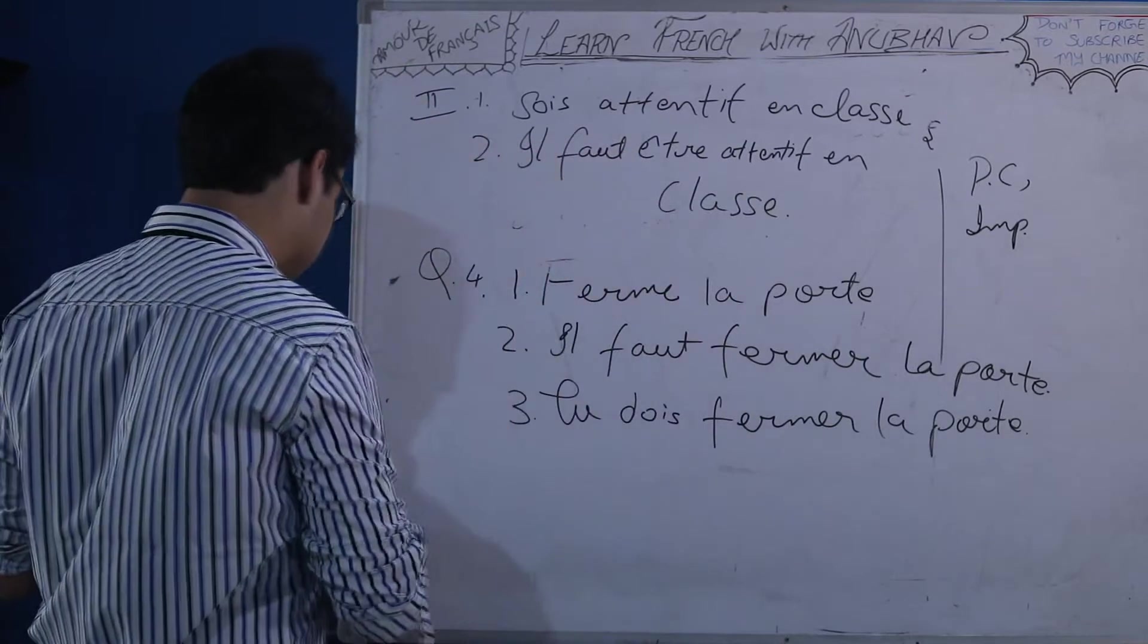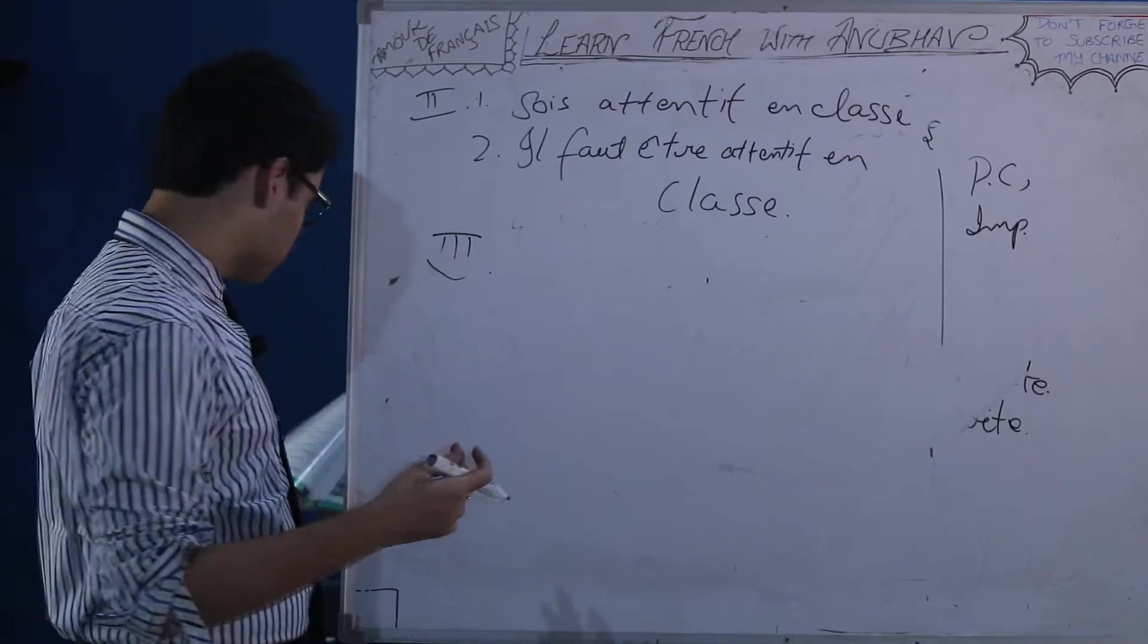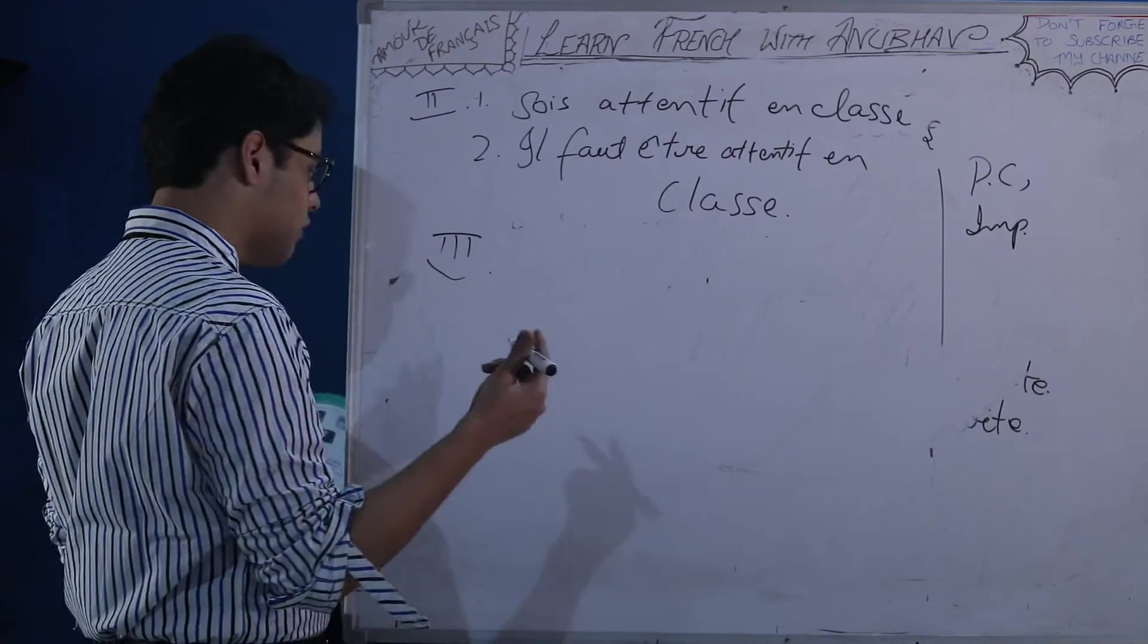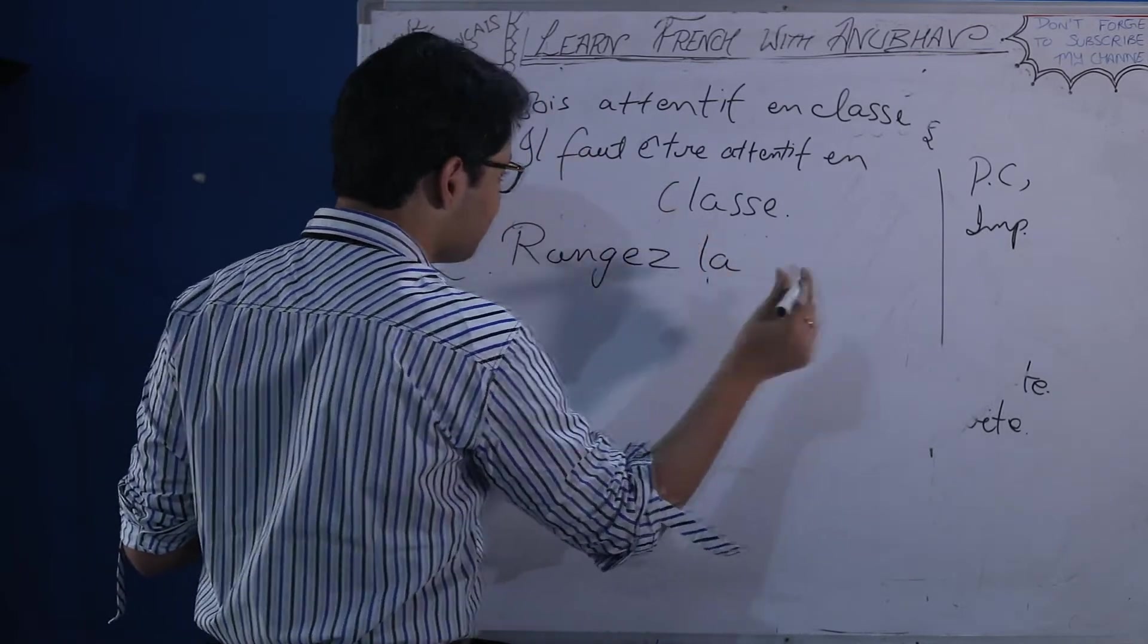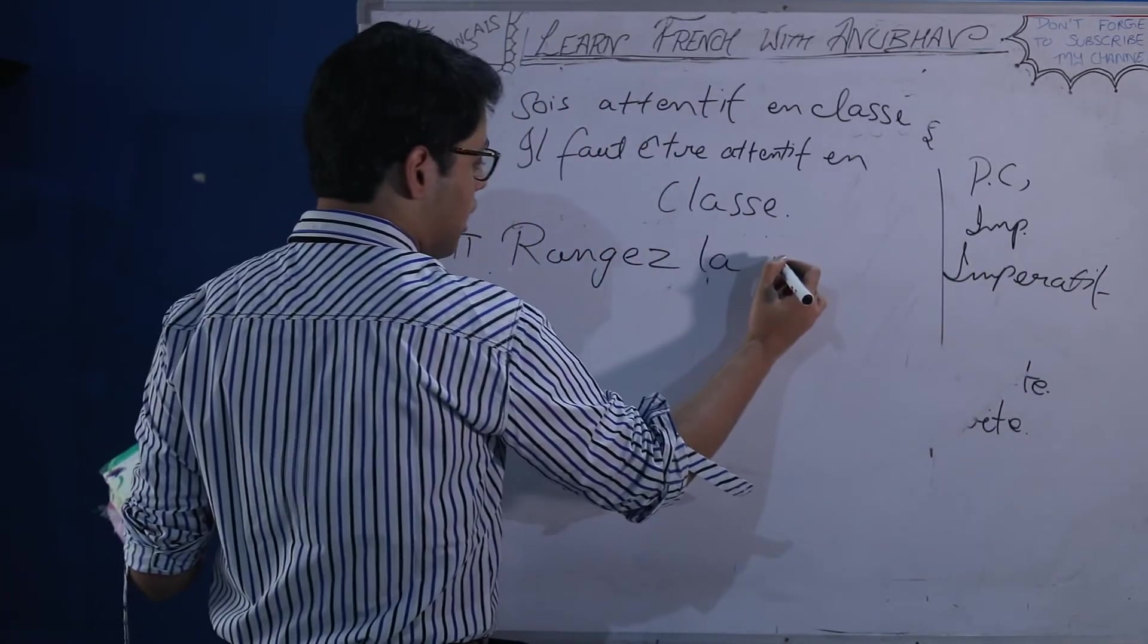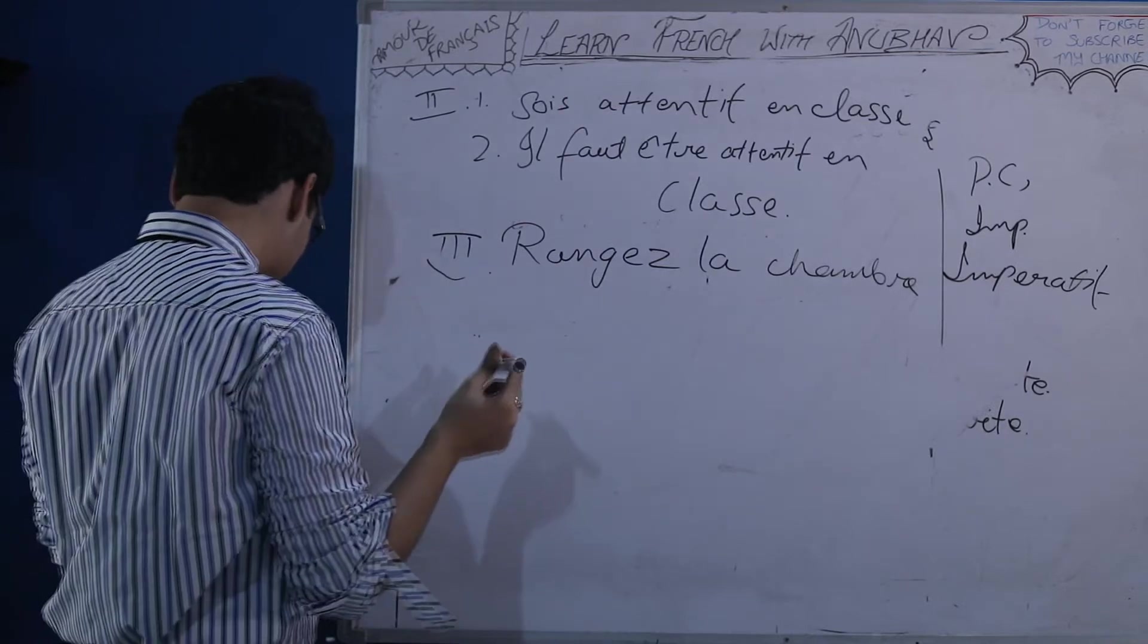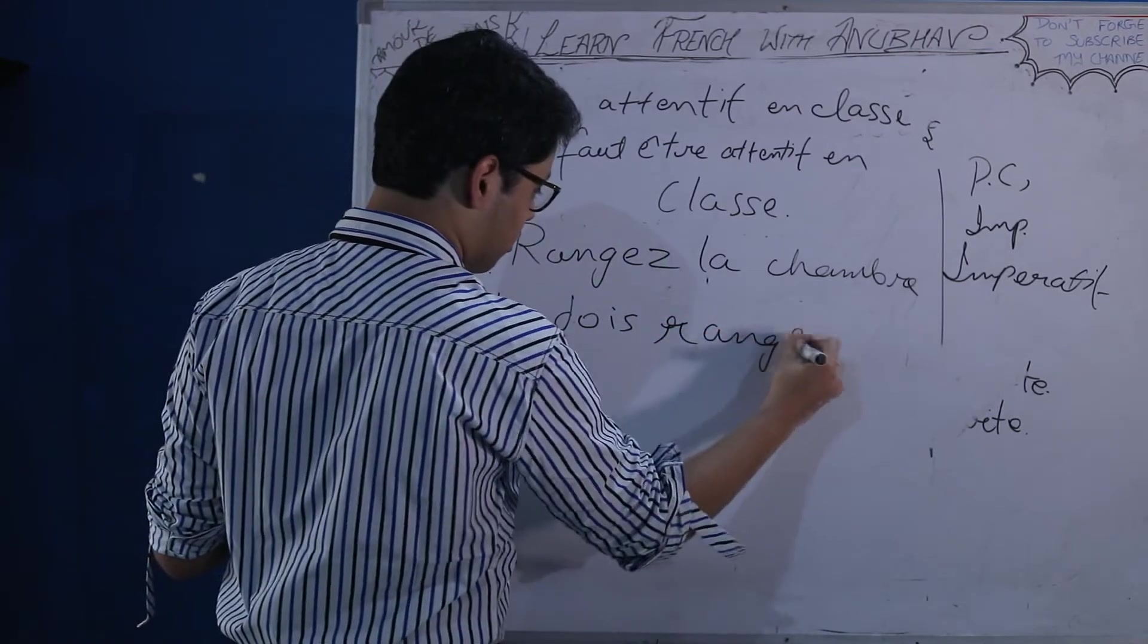Third, la mère dit à l'offre, the mother is speaking to the child, ranger la chambre, arrange the bedroom is the statement given, so il faut ranger la chambre, it is a must that the room should be arranged, so other ways of writing will be, first will be ranger la chambre in imperative, imperative can be also watched, it's a helpful video, ranger la chambre, imperative statement and the other one will be using il faut, no, il faut is already given, so it is to be done with devoir, so tu dois ranger la chambre